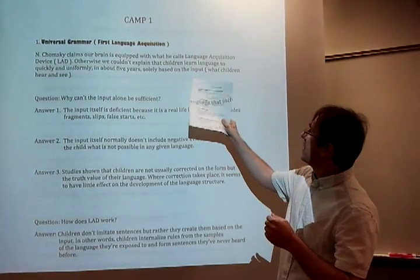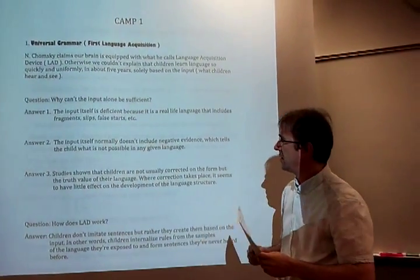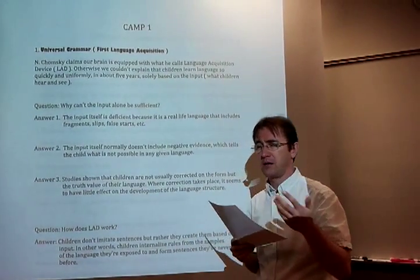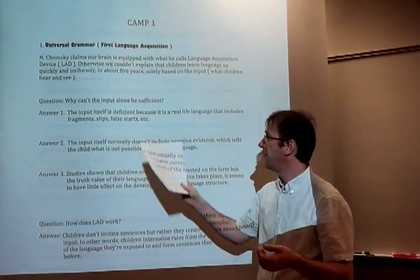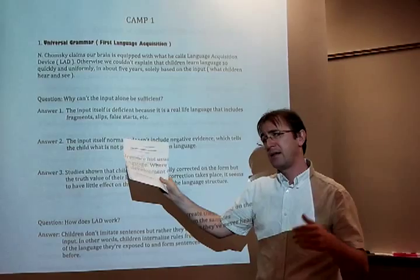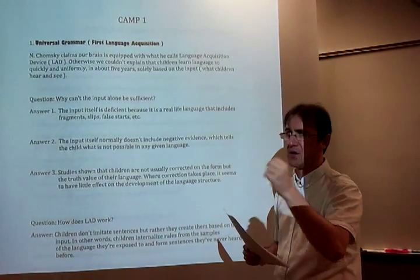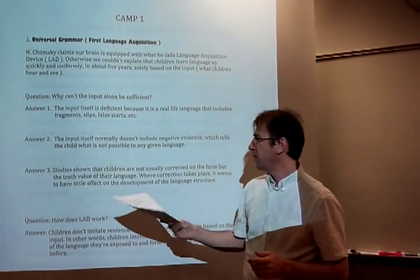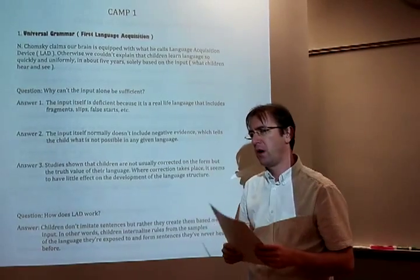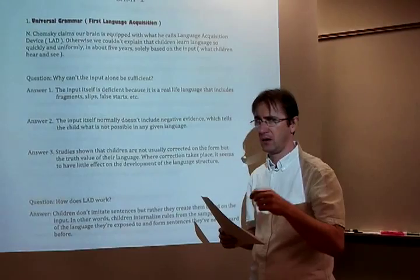Chomsky asks: why is the input insufficient? His first answer is that the input itself is deficient because in real life we make lots of errors — fragments, slips, false starts, and so forth. He also says the input is insufficient because it does not normally include negative evidence, meaning the child is not told what is not possible in the language. Third, studies have shown that when we correct children, we typically attend to the truth value of what they say rather than to their grammar.